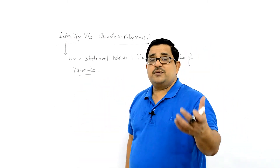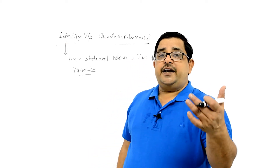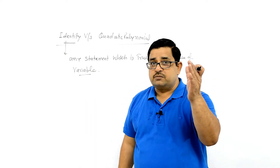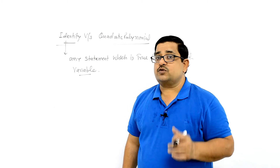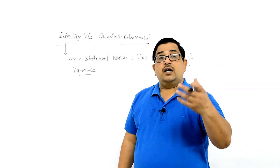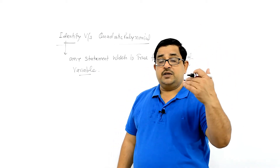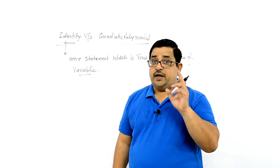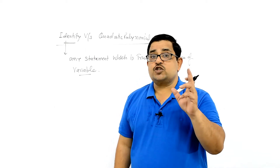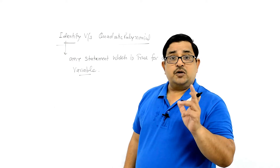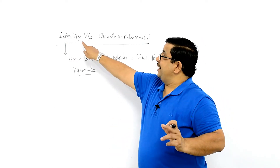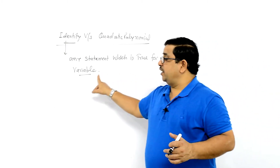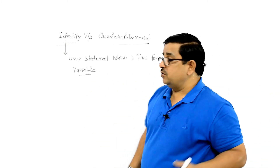Values कुछ भी हो सकती हैं, तो Identity में Number of solutions की बात करें — Equation में number of solutions होते हैं। जैसे Quadratic equation में 2 solutions होते हैं क्योंकि variable पे highest degree 2 होती है। किसी polynomial की highest degree n हो तो उसके maximum n solutions होते हैं। Identity में यह infinite solutions possible होती हैं।